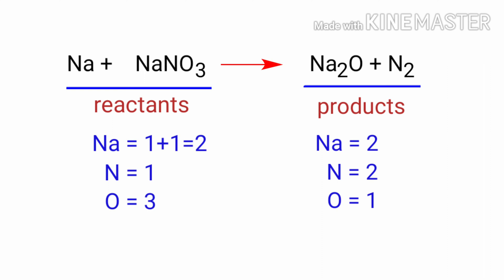The number of atoms are not balanced on both sides. To balance the chemical equation, we need to make use of coefficients. A coefficient is a number that we place in front of a chemical formula.